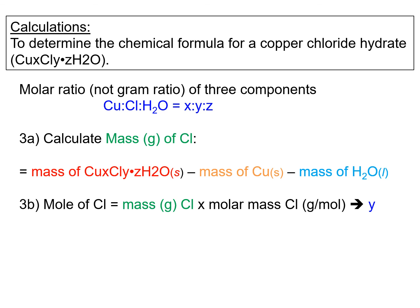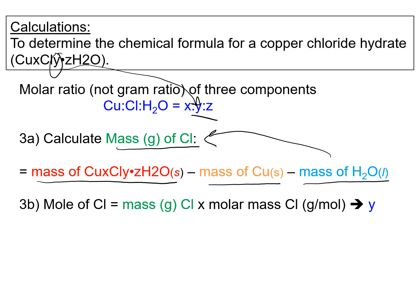Lastly, determine the moles of chloride — Y in your formula. First get the mass of chloride: take the original compound mass weighed before heating, subtract the mass of copper calculated previously, and subtract the mass of water calculated previously. The difference is the mass of chlorine. Since the formula requires the mole ratio, convert the mass of chloride using the molar mass of chlorine to get moles of chlorine — that is Y in your formula.